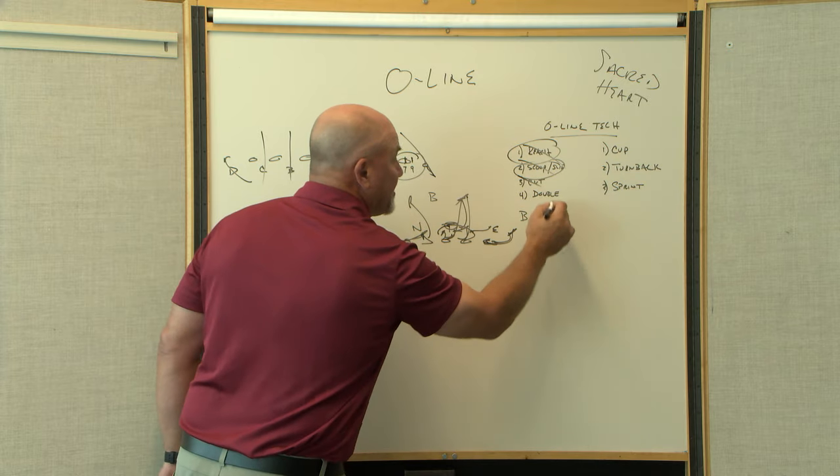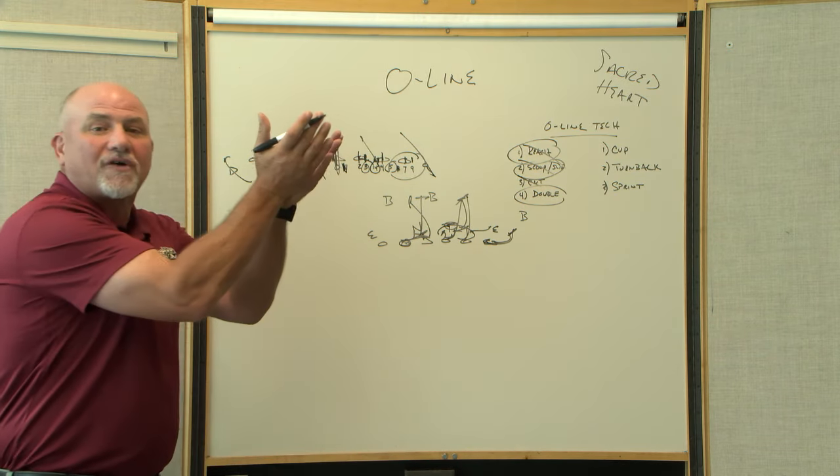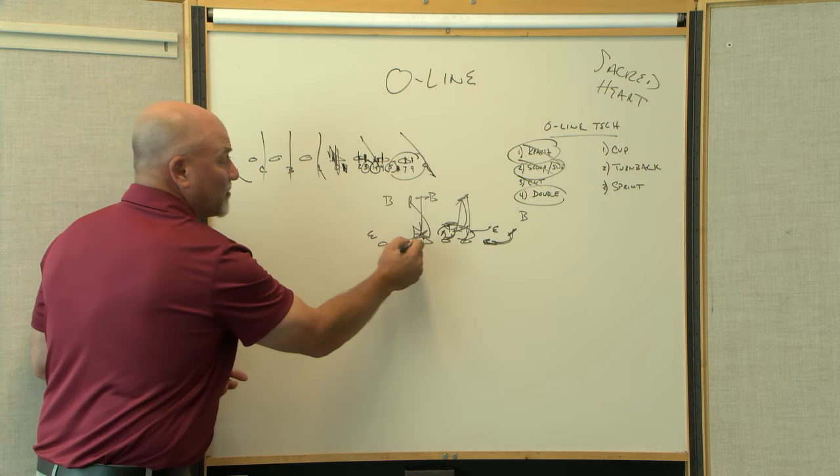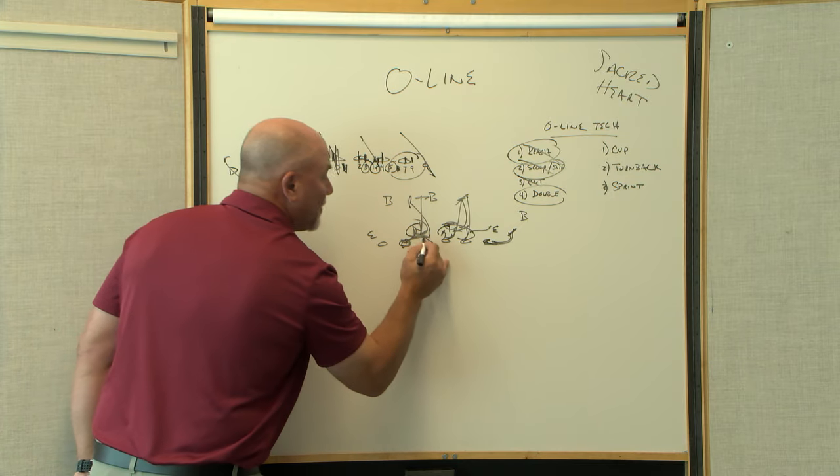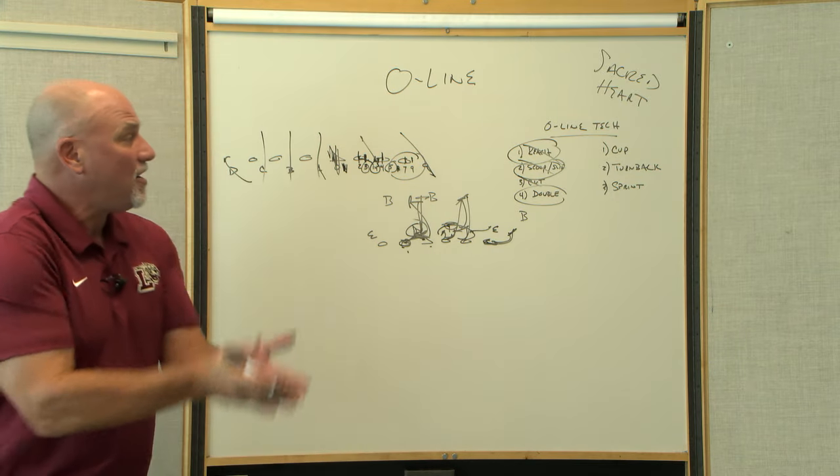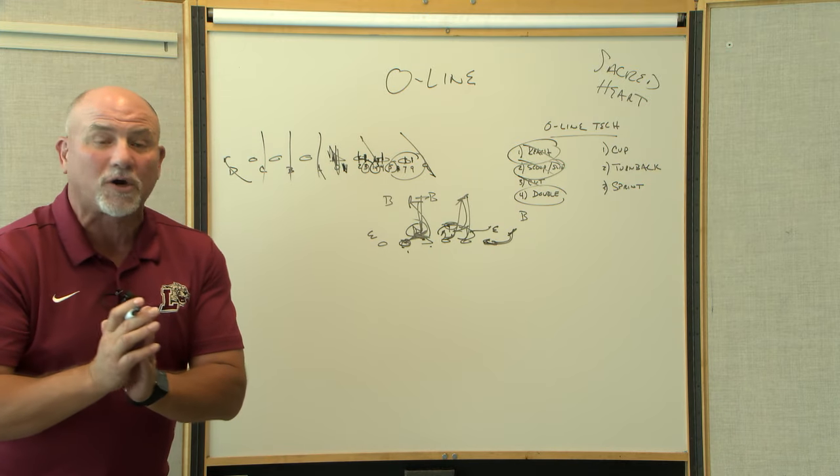So cut block, scoop block, reach block, a double team—a pure double, push him right straight up into the linebacker. So those are two 300-pound guys. That's 600 pounds on a 250-pound nose guard. Push him right straight back. We're going to get a nice double team up there. So those are the type of blocks we're going to need.